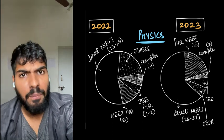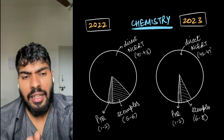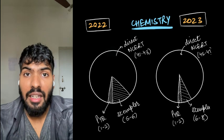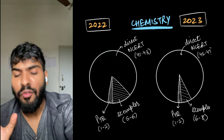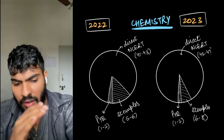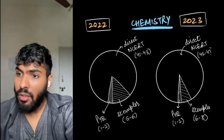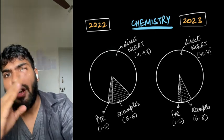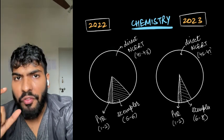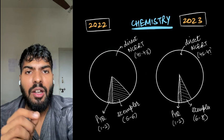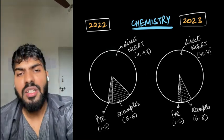If I talk about chemistry, in 2022 you'll notice that direct questions from NCERT were 41 to 43, and in 2023 they have increased to 45 to 47. That means the more advanced NEET gets, the more people that appear in NEET, the more NMC is leaning towards NCERT. You don't need to let go of NCERT - just focus on NCERT and you'll do well in 2024. Even if I talk about PYQs, you'll know that PYQ have increased and exemplar questions have increased in chemistry as compared to physics.